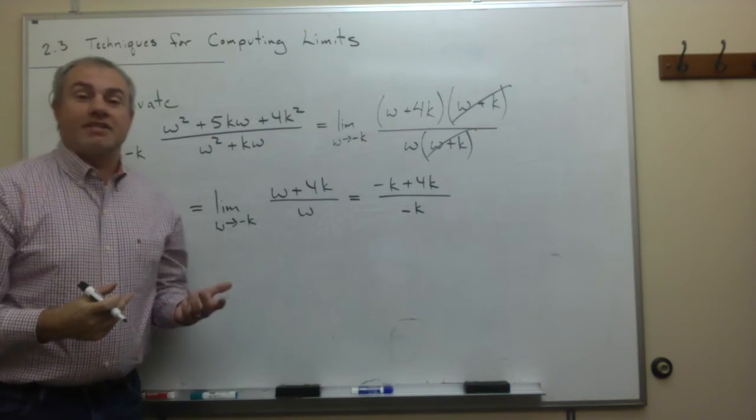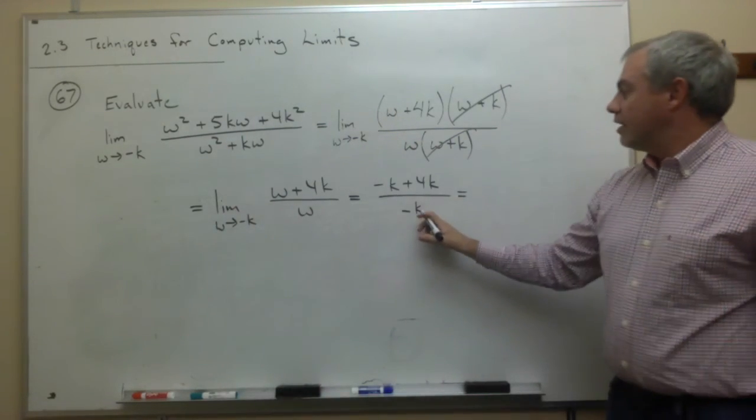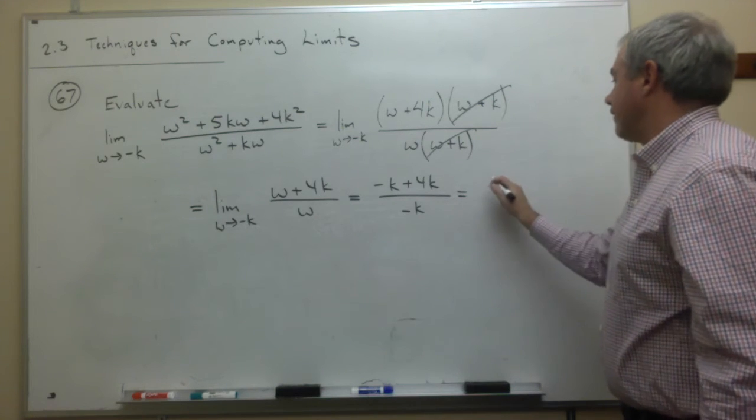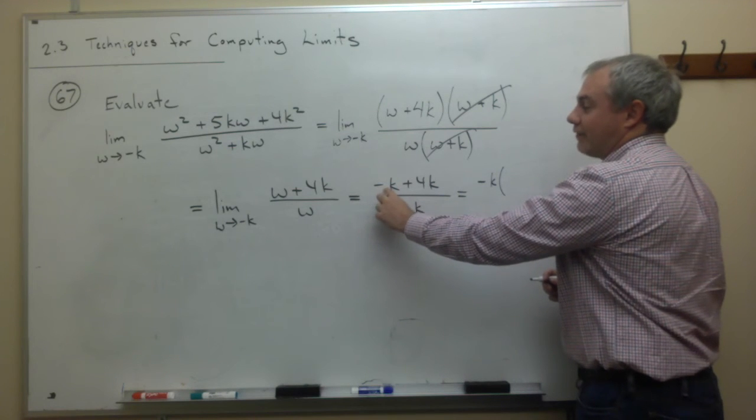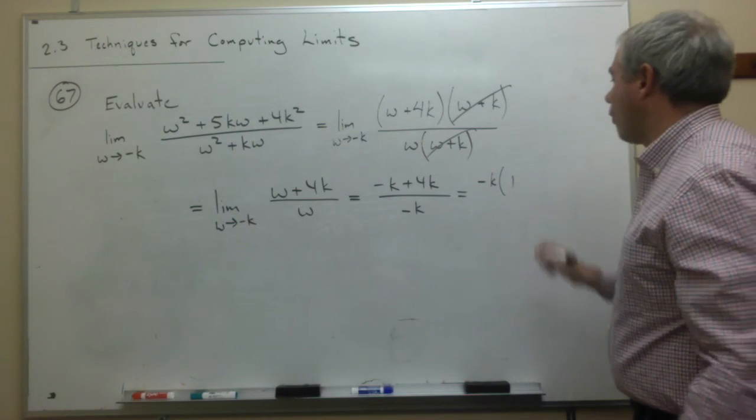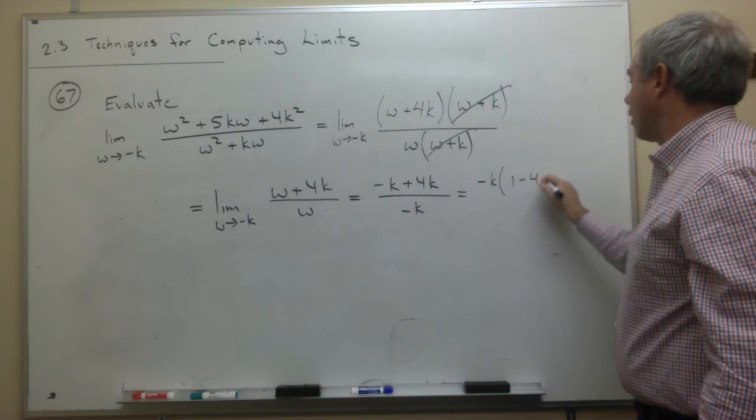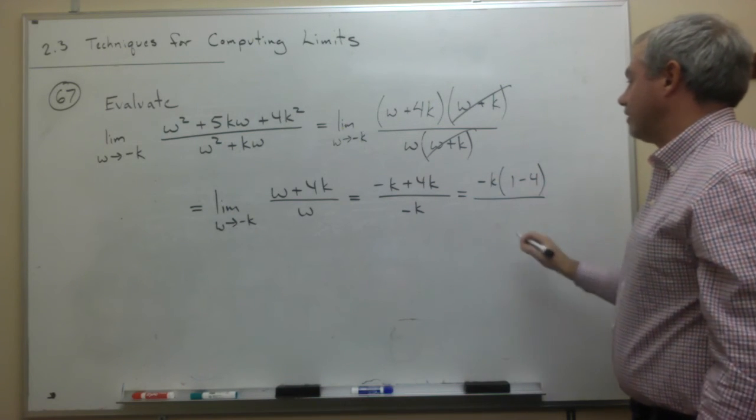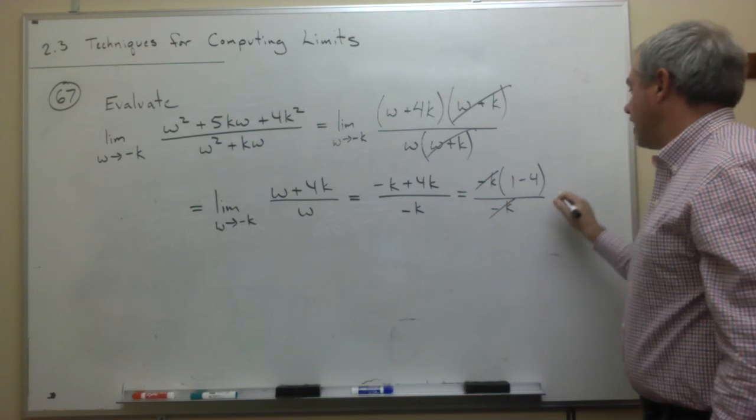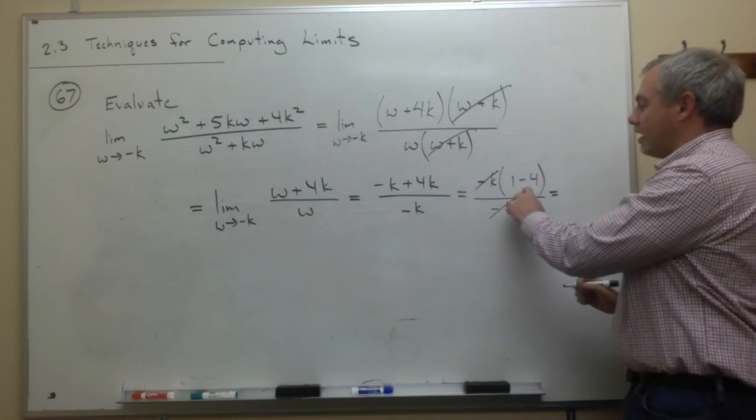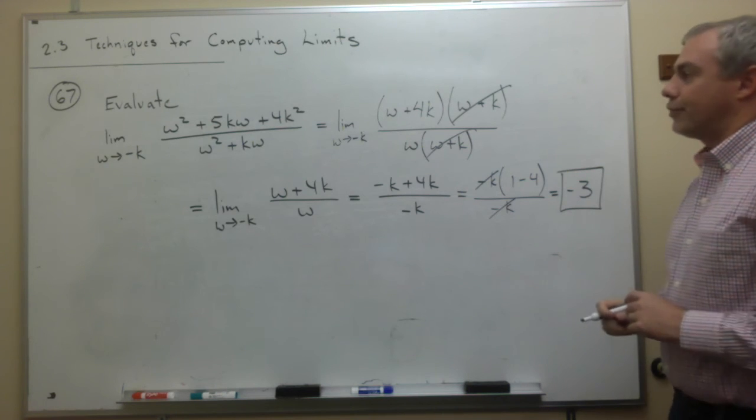I think we could simplify this just a little bit more, because on top I could factor out a negative k. If I did, I'd have negative k times, if I factor out a negative k from a negative k, I just have a 1. If I factor out a negative k from a 4k, I get minus 4, divided by negative k. The negative k's cancel, and I'm just left with 1 minus 4, which is negative 3.